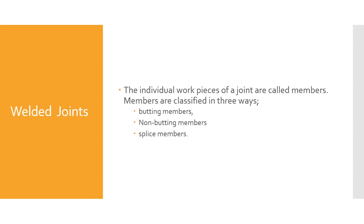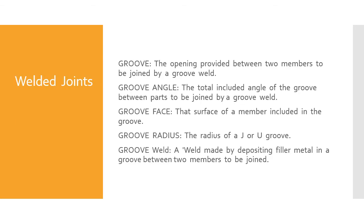The individual work pieces of a joint are called members. Members are classified in three ways: budding members, non-budding members, and splice members.